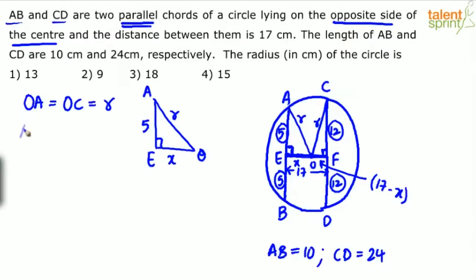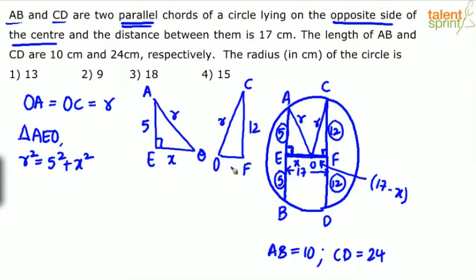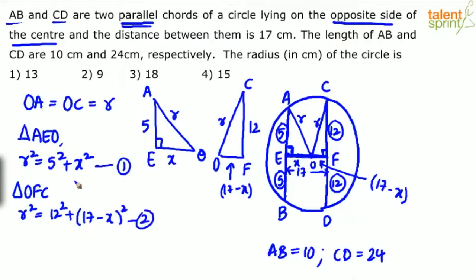By applying the Pythagorean theorem in triangle AEO, we can say R squared equals 5 squared plus X squared. Similarly, looking at the other triangle OCF — where OF is 17 minus X and CF is 12 — applying Pythagoras theorem gives R squared equals 12 squared plus (17 minus X) squared. So we have equation 1 and equation 2 — two equations with two unknowns: R and X.